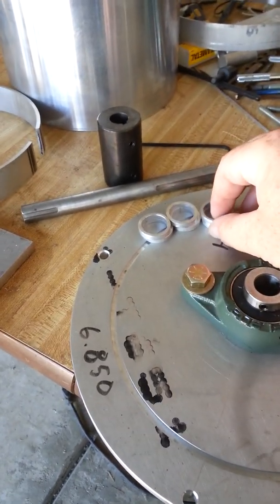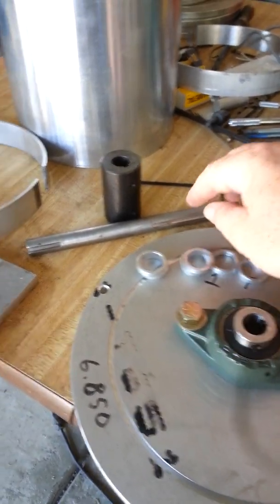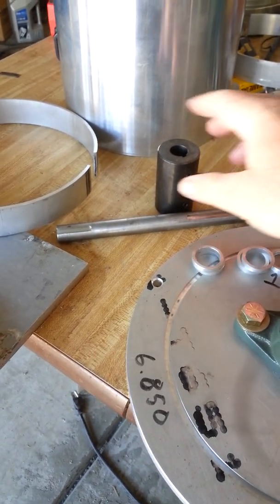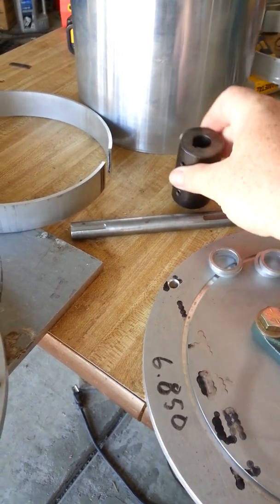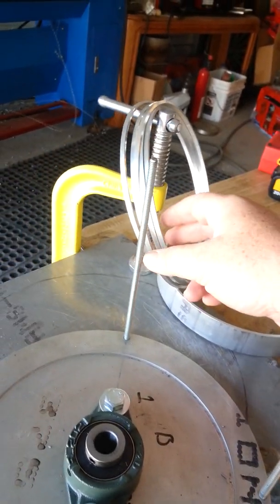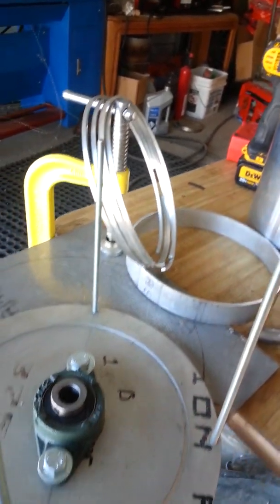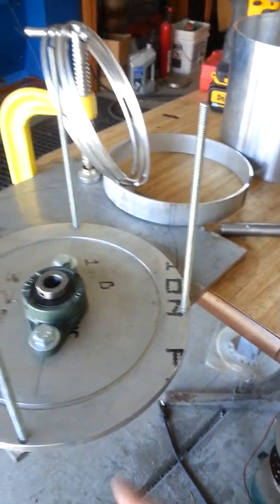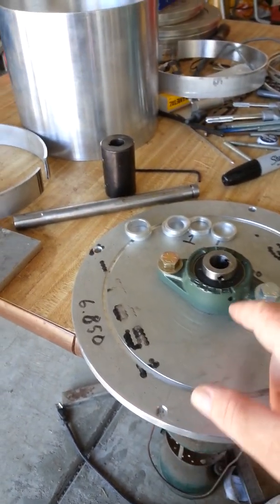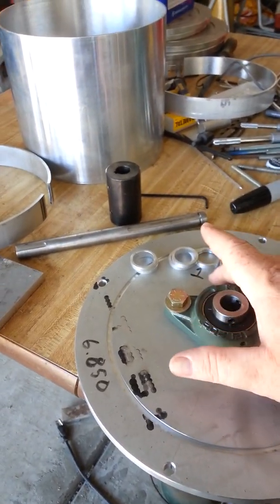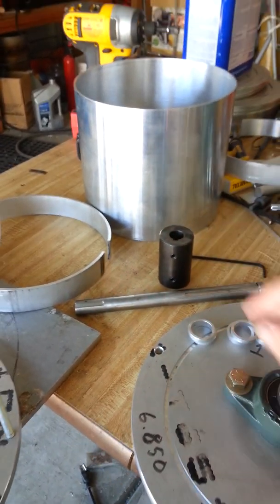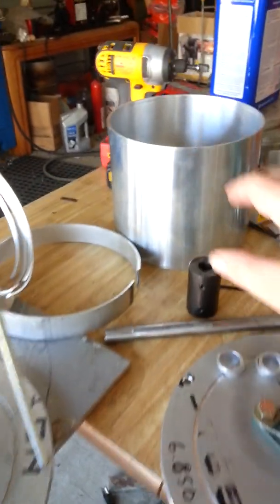You're going to have your ID shims, drive shaft with a keyway in it, disc pack hold down, set shim, OD set shim, and your OD shims. So top plate, bottom plate, top plate, your bearings, your ID shims and OD shims, drive shaft, disc pack hold down, and the body.